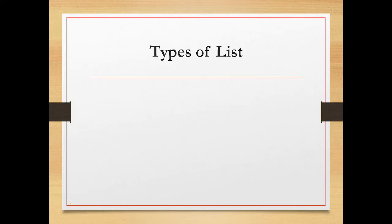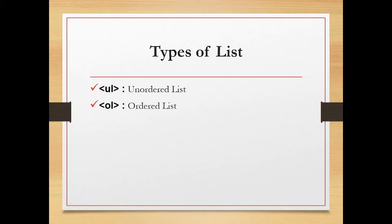We have different types of lists. The first one is the unordered list, represented with the ul tag. The second is the ordered list, represented as the ol tag. Then comes the definition list, represented with the dl tag. And we also have nested lists. We'll be seeing them one by one.